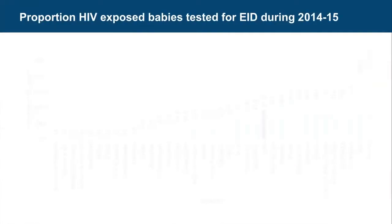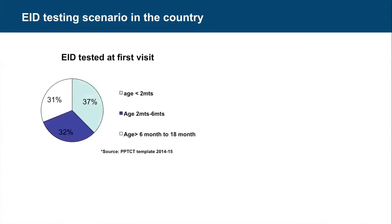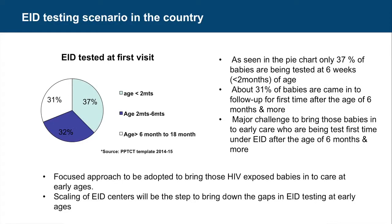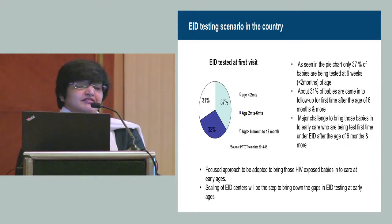Looking at state-wise data, many northern states are performing poorly while southern states are doing quite well. Some states have done more than 100% because when there were issues with DBS cards or consumables, they did backlog testing once supplies were received. Another challenge is that only 37% of babies were tested between six weeks and eight weeks. We expect most babies to come at six weeks, and now that EID is available in all standalone ICTCs, we hope this indicator will improve.